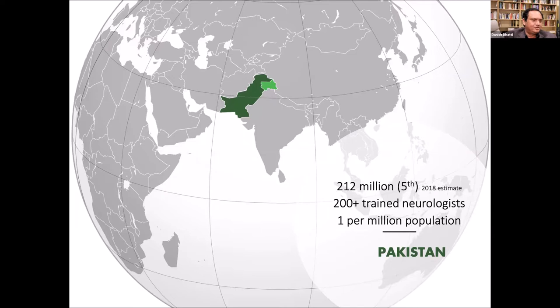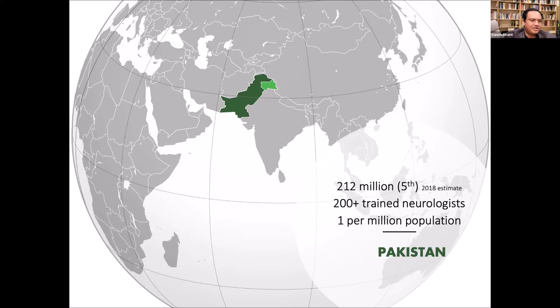Let me start with a context or case study. I'm from Pakistan and I've been in Nebraska since 2009. Pakistan is the fifth largest by population country in the world with 212 million people and about 200 or so trained neurologists — that's about one neurologist per million population. To compare, Nebraska has 2 million people, so that would be just two neurologists for the whole state.